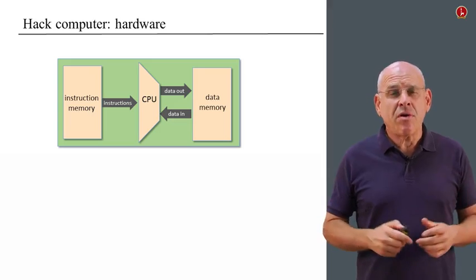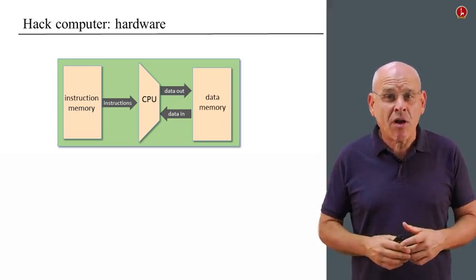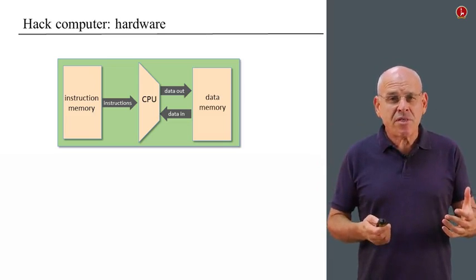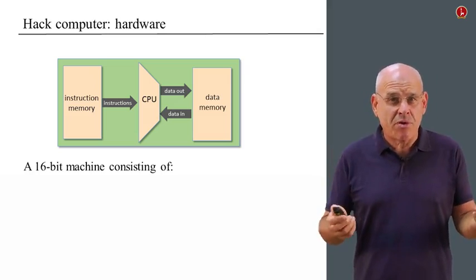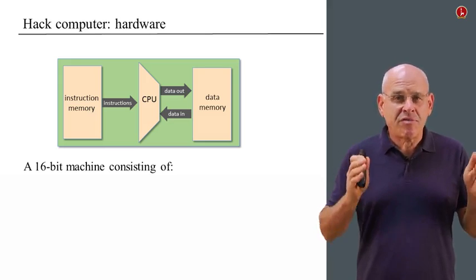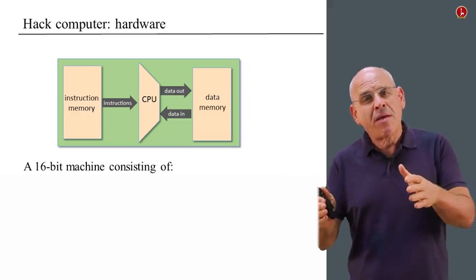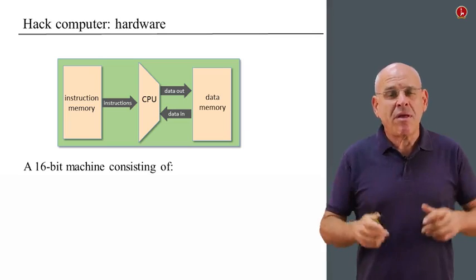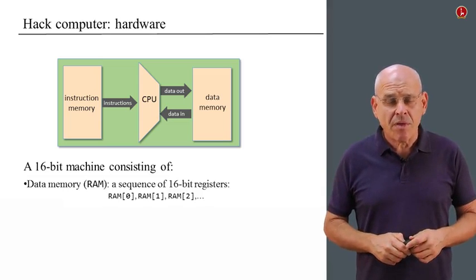So here's an overview of the computer that you're going to build from next week onward. In fact, you've been building this computer all along. But next week, we're going to actually assemble all these pieces together. And we're going to have a computer which consists of three main elements. We're going to have, first of all, a 16-bit computer. And a 16-bit computer is a machine in which everything consists of chunks of 16 bits. So this is the atomic unit of information in this computer.